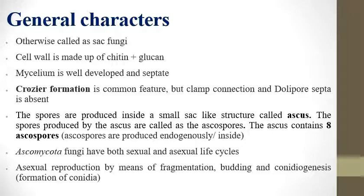Spores are produced in a sac-like structure — that is why they are called Sac fungi. This sac-like structure is called the ascus. Each ascus contains 8 ascospores. Almost all Ascomycota produce 8 ascospores, except a few.